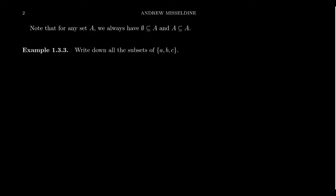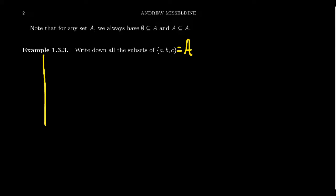This is important to mention because I want to do an example where we write down all the subsets of the set {a, b, c} — let's call it capital A. As I list the subsets, this will include the empty set (sometimes called the trivial subset), the improper subset which is everything, and all the non-trivial proper subsets. Whenever you're asked to enumerate all elements of a set, it can be difficult as the set gets bigger. So if you're trying to list them all, you might need a strategy to make sure you get everything and don't miss anything.